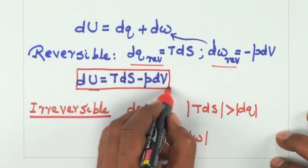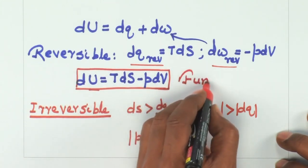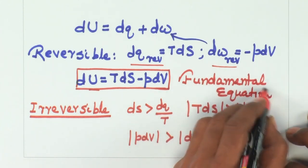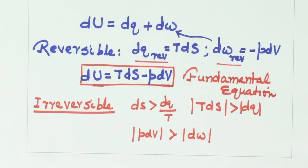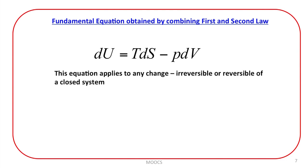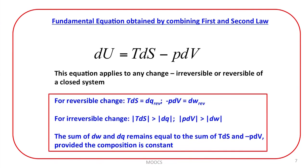Therefore, this equation is applicable to both reversible and irreversible changes, and is called the fundamental equation. So dU equals T dS minus P dV applies to any change — whether irreversible or reversible — of a closed system, where composition is not changing. This is why this equation is given the name 'fundamental equation.'